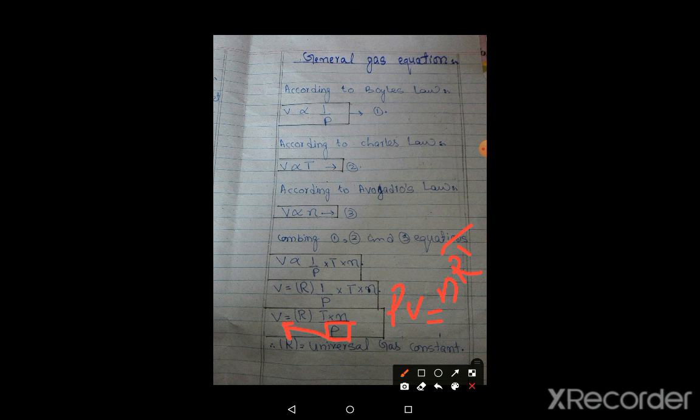T for temperature, R for universal gas constant, and n for number of moles. P for pressure, V for volume. And you can see this equation.